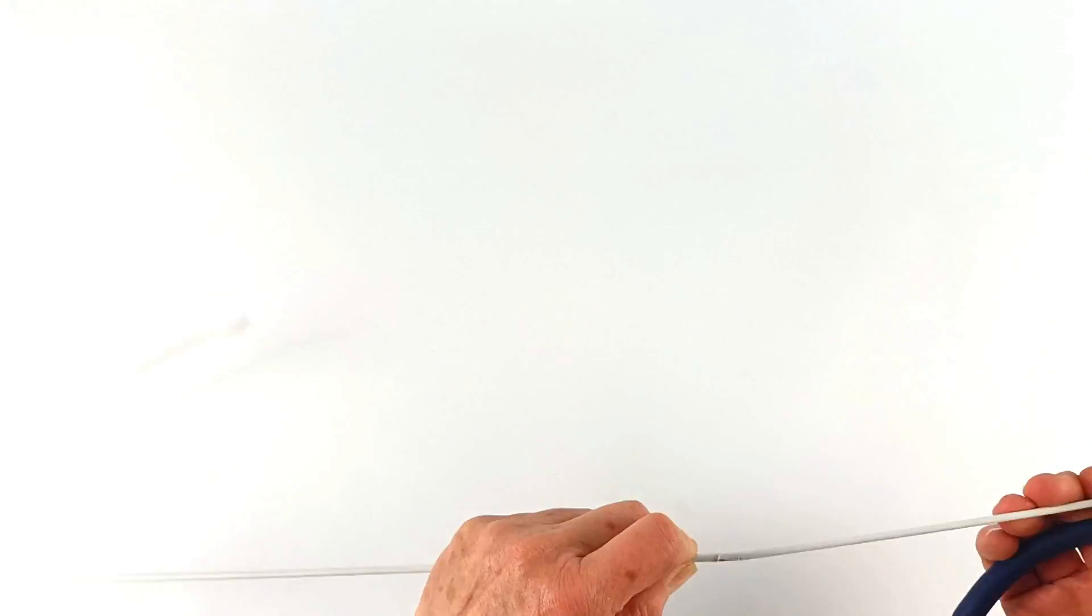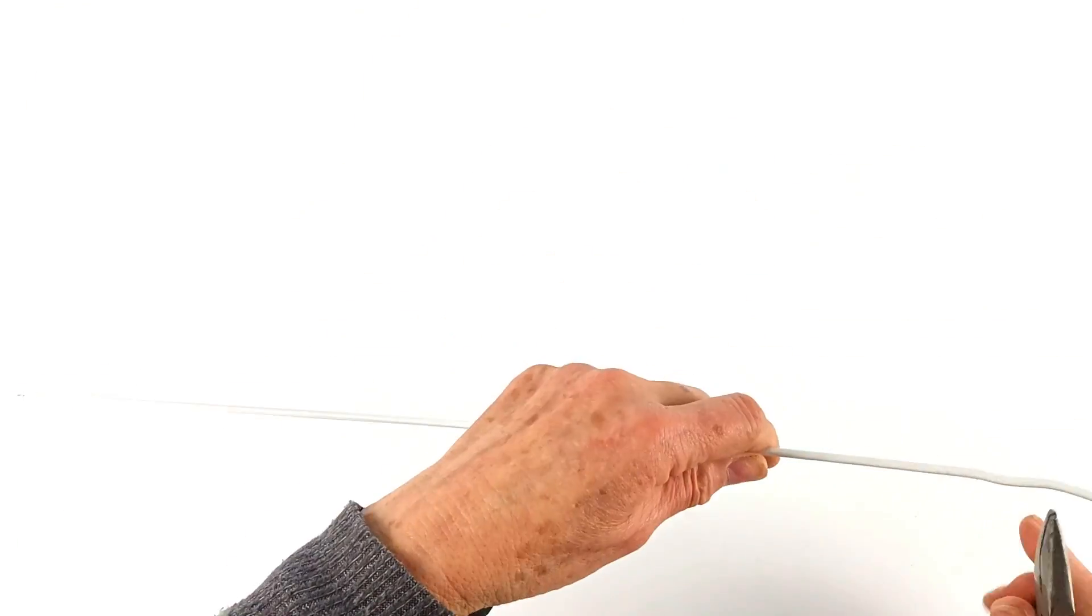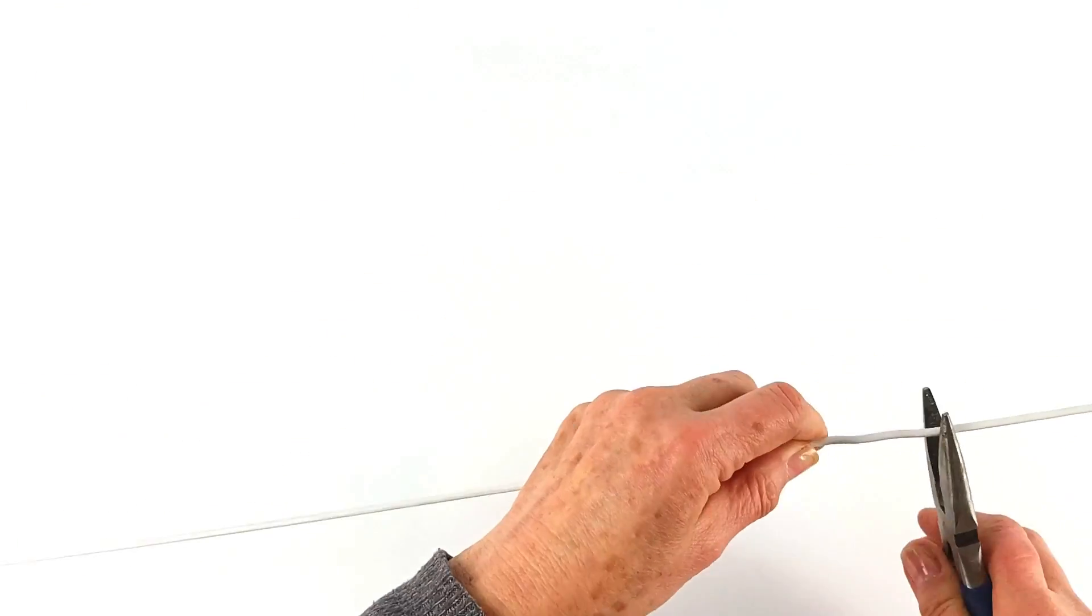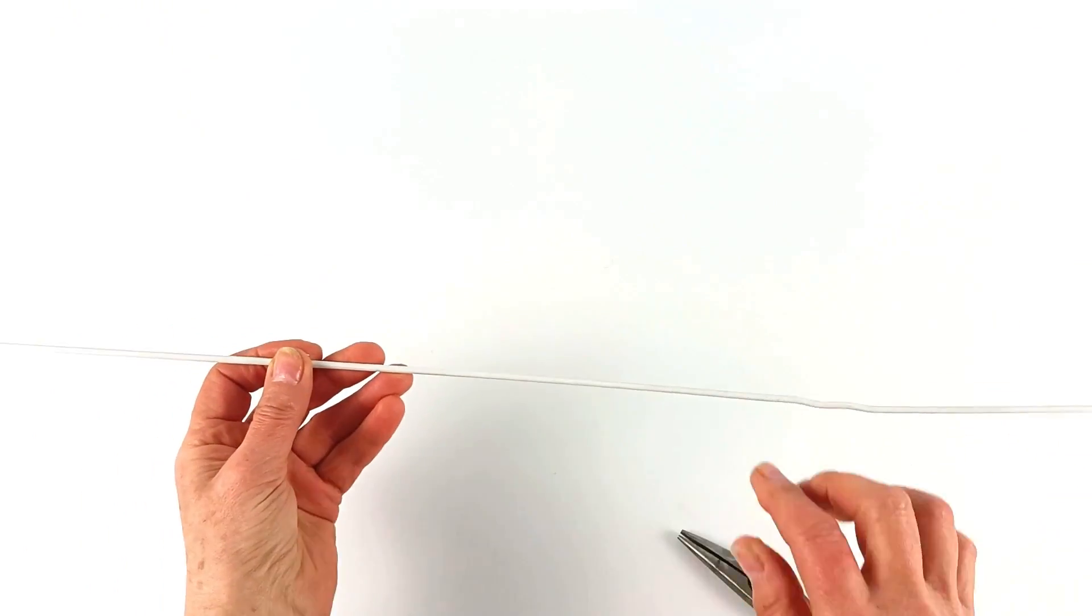Then we're just going to use some pliers and we want to get it nice and straight. You can do it mostly with your hands but the pliers do help make it a little bit easier. If you have the budget you could definitely buy wire for this, but we prefer to try and use recycled materials.